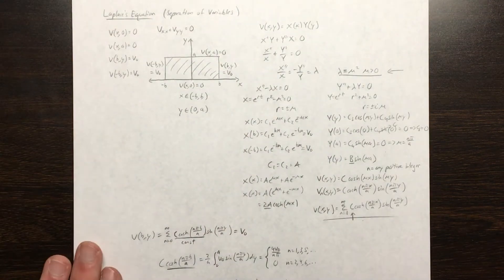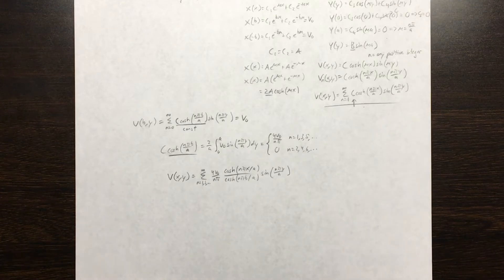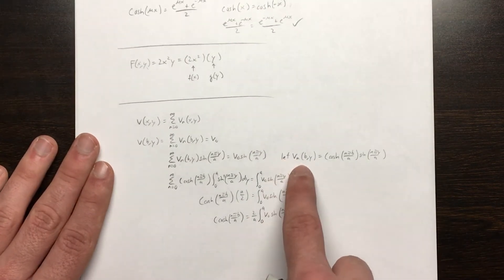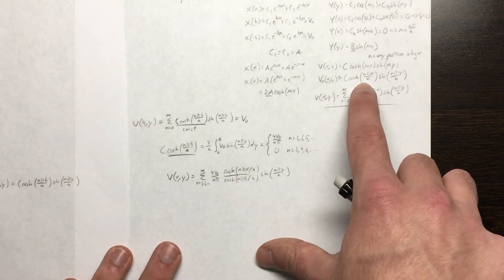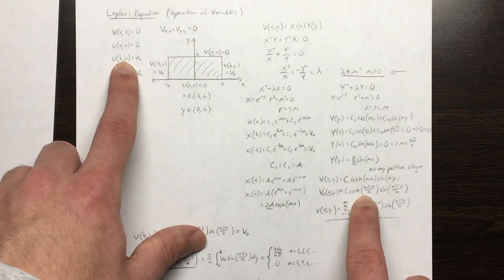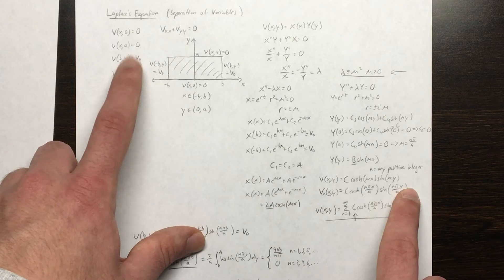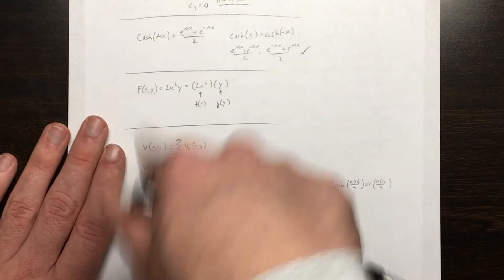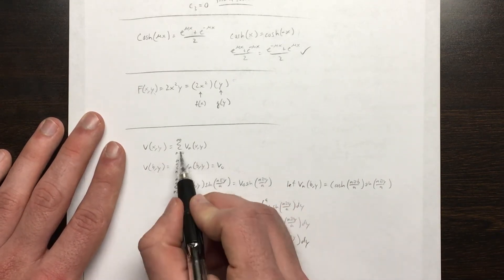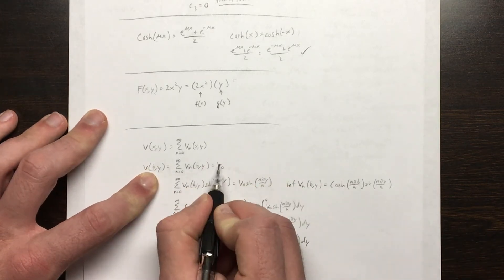So the process is: you want to determine the sign of lambda such that your solution with the given boundary conditions does not lead to the trivial solution. Now let's find the coefficient c. We take v_n(x,y) evaluated at x = b and set it equal to v-naught, applying that boundary condition. Our final function v(x,y) equals the sum over all v_n, and we apply our boundary condition to this.